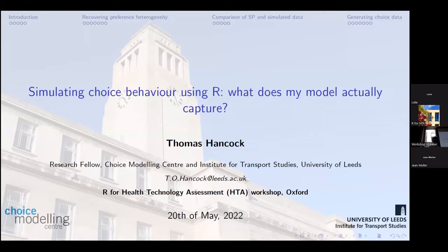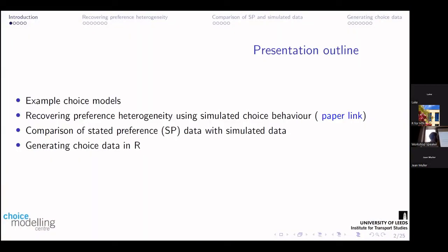Hi everyone, my name is Thomas Hancock, no relation to Matt Hancock. I'm going to be talking about simulating choice behaviour and what does my model actually capture. This is really building on from John's presentation. I apologise to the people online who've come in a bit later and missed some of what John said. I'm going to give a couple of very brief examples of choice models, and then talk about an example where we've used simulated choice behaviour to cover preference heterogeneity, and give a comparison of stated preference data with simulated data.